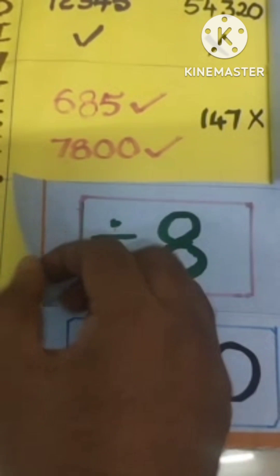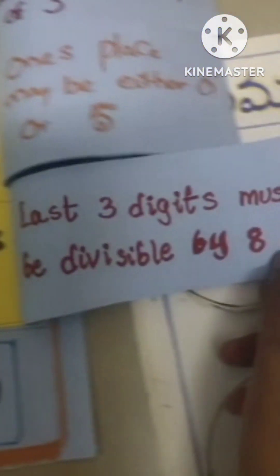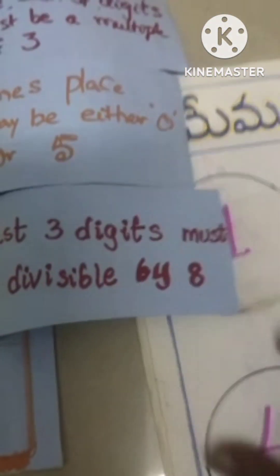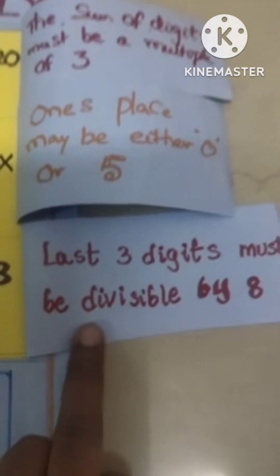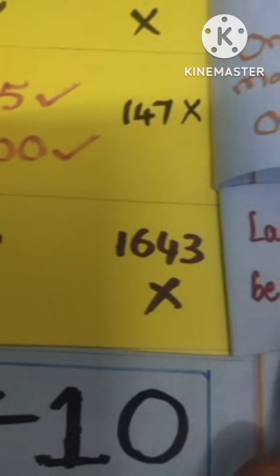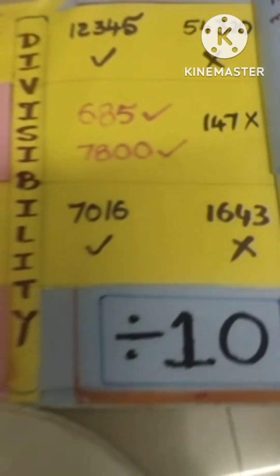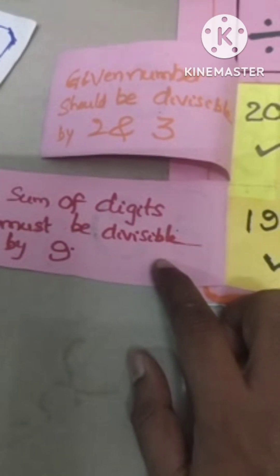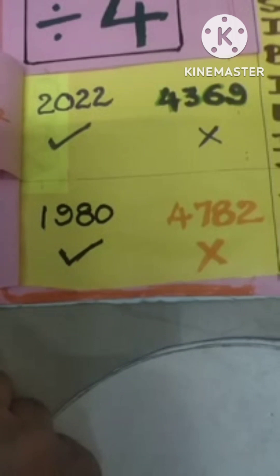Coming to divisibility rule eight: the last three digits must be divisible by eight. Let us check those numbers — 1,643 is not divisible. And coming to number nine: the divisibility rule for nine states the sum of digits must be divisible by nine, similar to the rule for three. Check these two numbers.